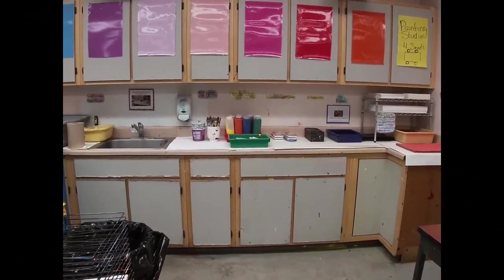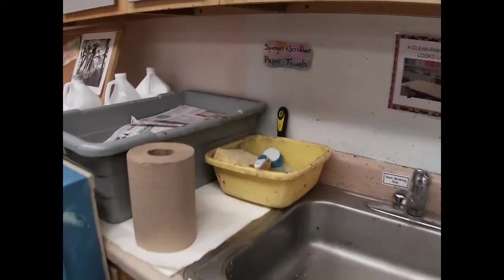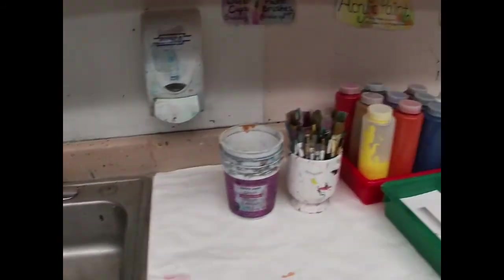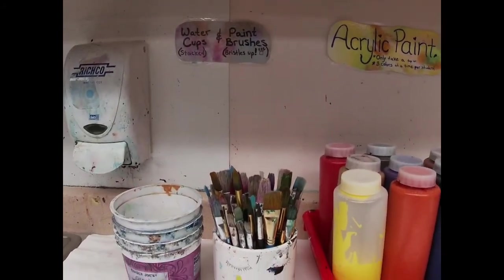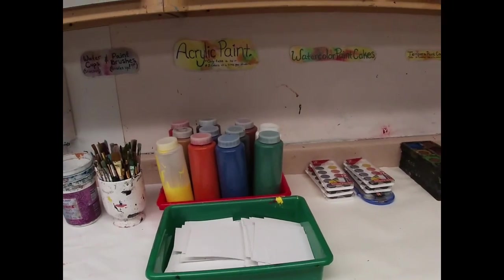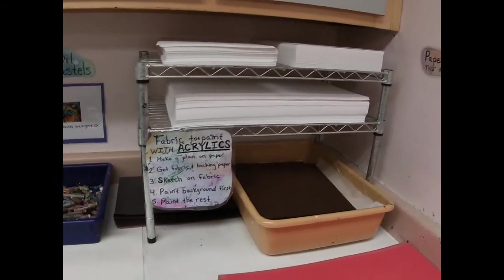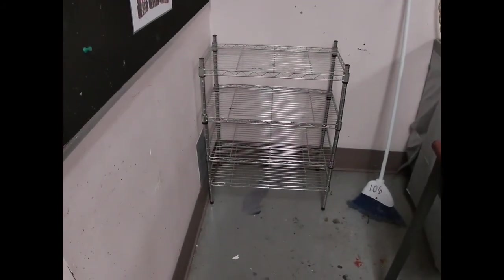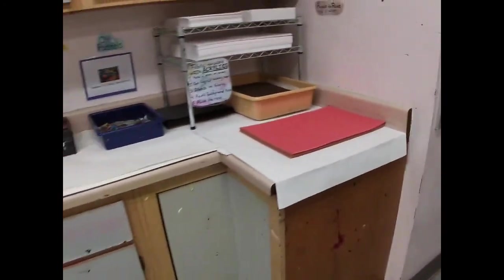In the painting studio on the counter there's sponges with a sign. Everything has a sign so that you know where to find things. Stack the water cups and brushes bristles up please. Acrylics, watercolors, tempera paints, oil pastels, paper and fabric for painting. And then over here is a shelf for painting objects that need to dry. Keep it neat and tidy.